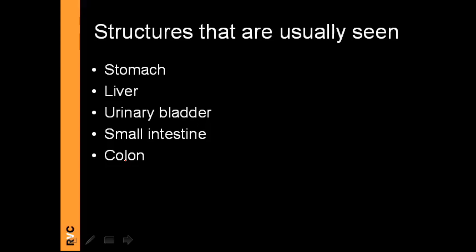Most people haven't realized that we don't always see all the organs and structures in the abdomen. Structures we commonly see include the stomach, liver, urinary bladder, small intestine and colon, especially the descending colon.